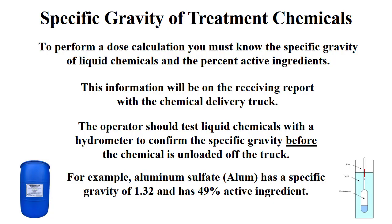To perform a dose calculation, you must know the specific gravity of the liquid chemical and the percent active ingredient. In each chemical delivery, the truck driver should give the plant operator a receiving report with this information. The operator should test the chemical on every delivery with a hydrometer to confirm the specific gravity before the chemical is unloaded off the truck.